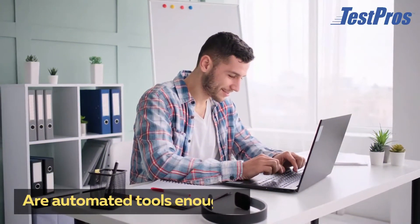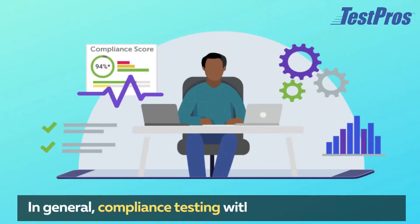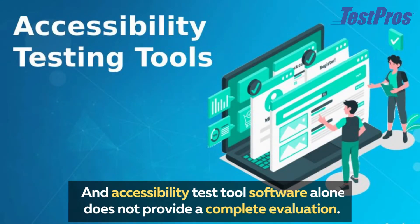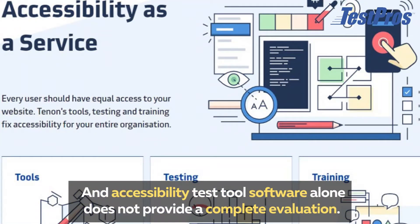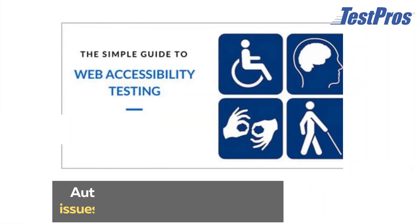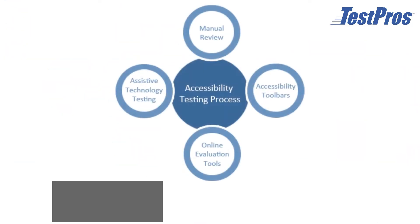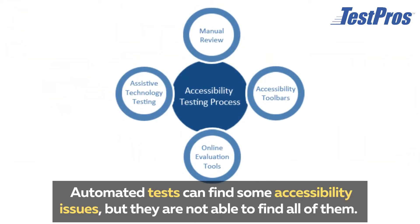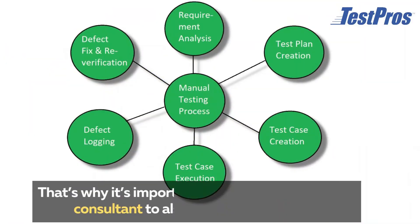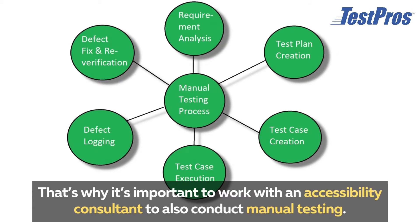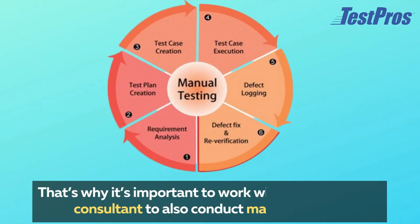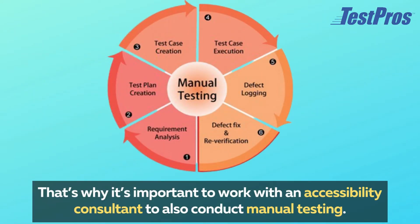Are automated tools enough? In general, compliance testing with assistive technologies and accessibility test tools software alone does not provide a complete evaluation. Automated tests can find some accessibility issues, but they are not able to find all of them. That's why it's important to work with an accessibility consultant to also conduct manual testing.